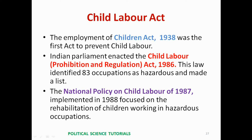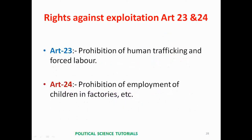In the Indian Constitution, rights against exploitation are stated in Articles 23 and 24. Article 23 deals with prohibition of human trafficking and forced labour, and Article 24 deals with prohibition of employment of children in factories, etc.